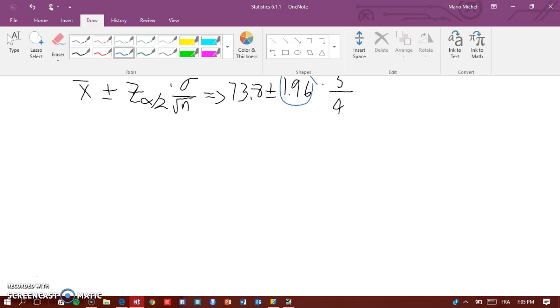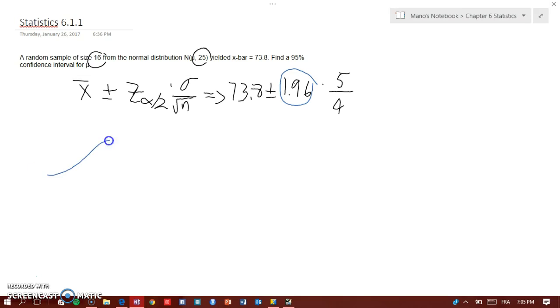Now this 1.96 here, guys, this is how you get that 1.96. Basically you have a normal distribution, normal graph, right? And because it says equal, this is actually a two-tail.